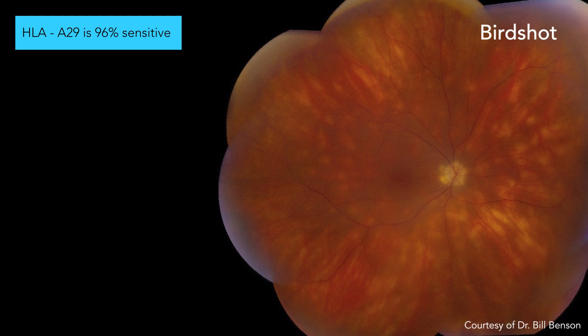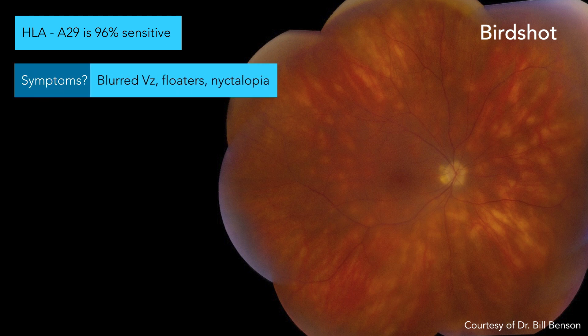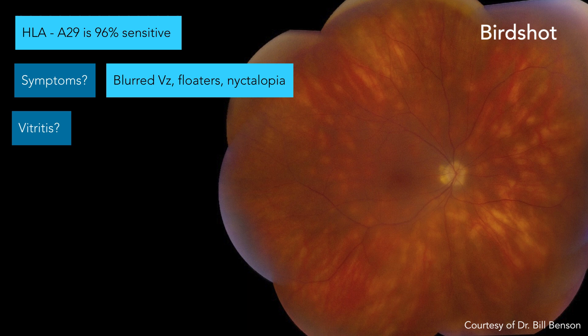Textbook: these are going to be older patients. Nasal radial distribution — it's almost like they emanate in this kind of radial pattern. Sometimes they follow choroidal vessels. They do not become hyperpigmented over time; I think that's key. So, Chris, what would somebody come in with if they got birdshot and didn't know it? What would they describe their symptoms as? Nyctalopia — right, nyctalopia is not common amongst the white dots, but it is seen here. Blurred vision, floaters, nyctalopia.